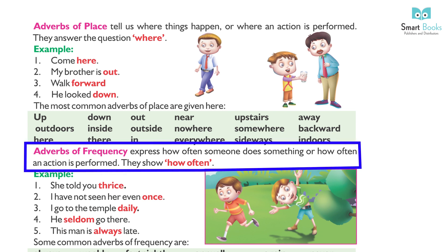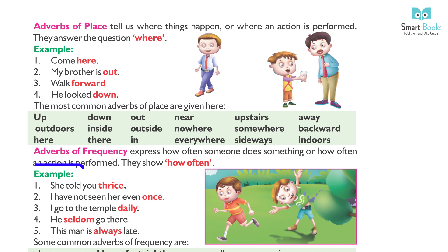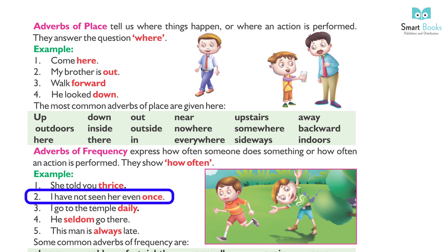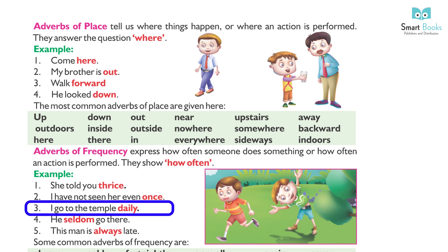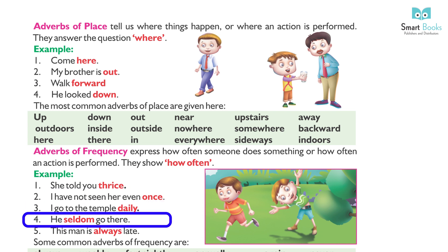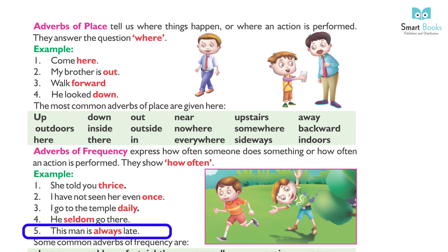Adverbs of frequency express how often someone does something or how often an action is performed. They show 'how often.' Examples: 1. She told you thrice. 2. I have not seen her even once. 3. I go to the temple daily. 4. He seldom goes there. 5. This man is always late.